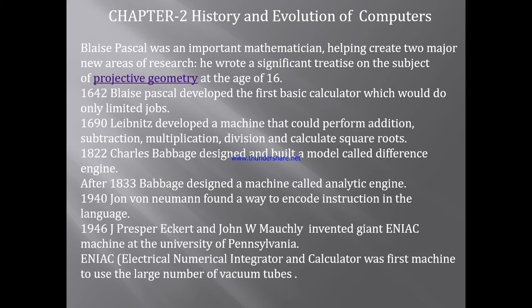In 1940, John von Neumann found a way to encode instructions in language. In 1946, J. Presper Eckert and John W. Mauchly invented the giant ENIAC machine at the University of Pennsylvania. ENIAC stands for Electrical Numerical Integrator and Calculator, and was the first machine to use a large number of vacuum tubes.